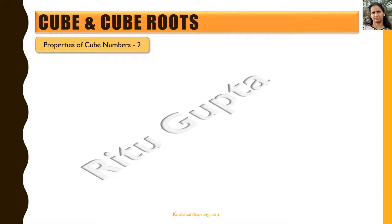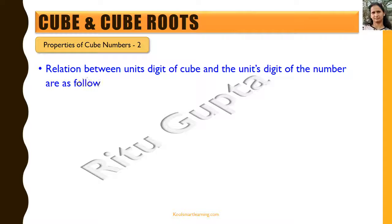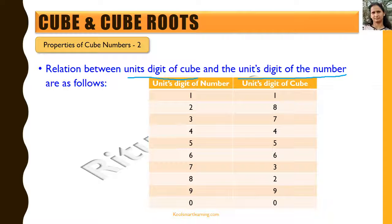Let's look at some more properties of cube numbers. There is a definite relation between the units digit of a cube number and the units digit of the number whose cube it is. If the units digit of the number is 1, the units digit of its cube will always be 1. For example, 11 × 11 = 121, and 121 × 11 = 1331, so the units digit remains 1.